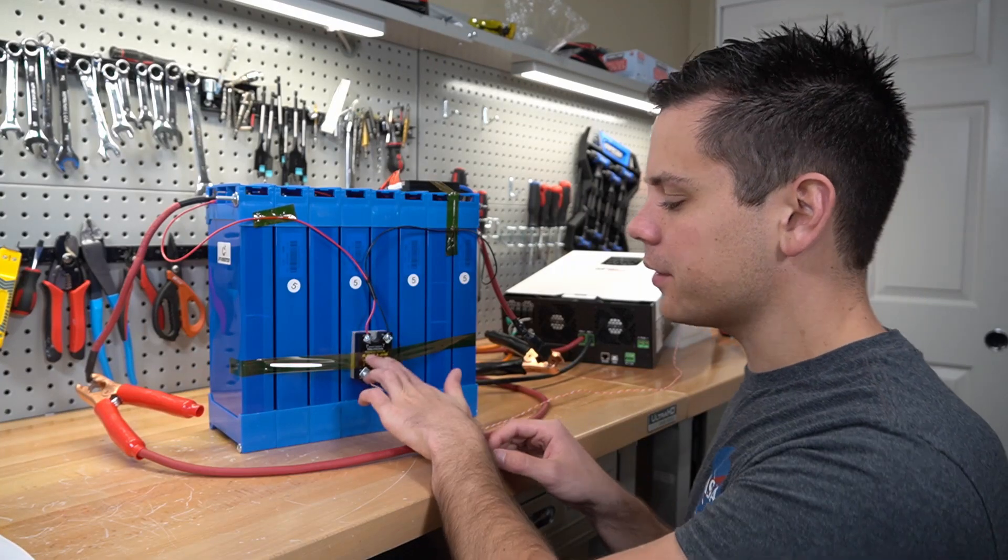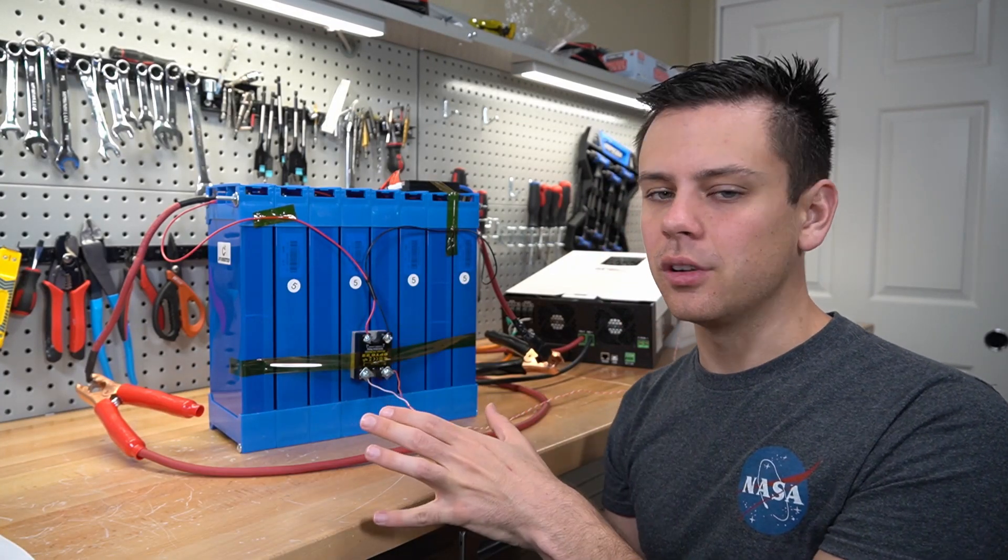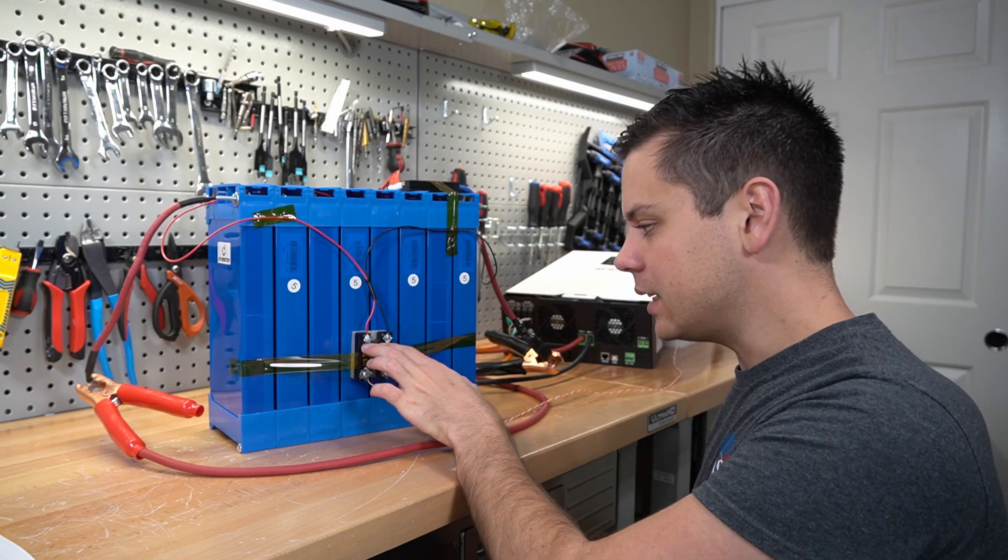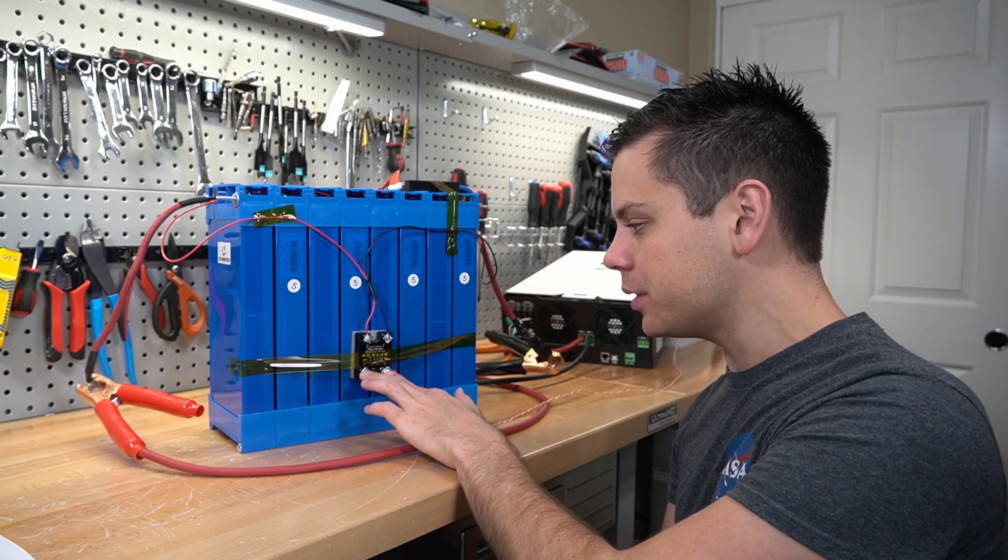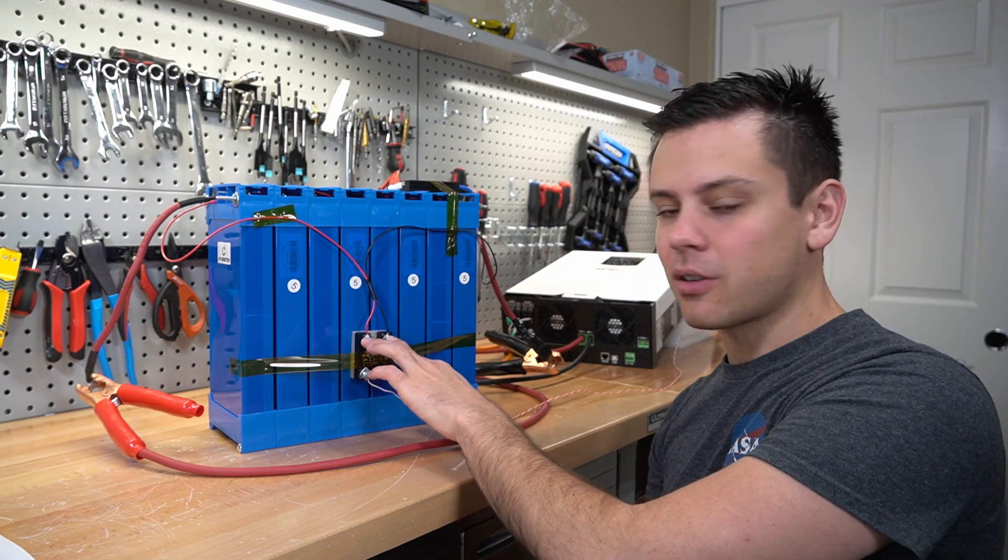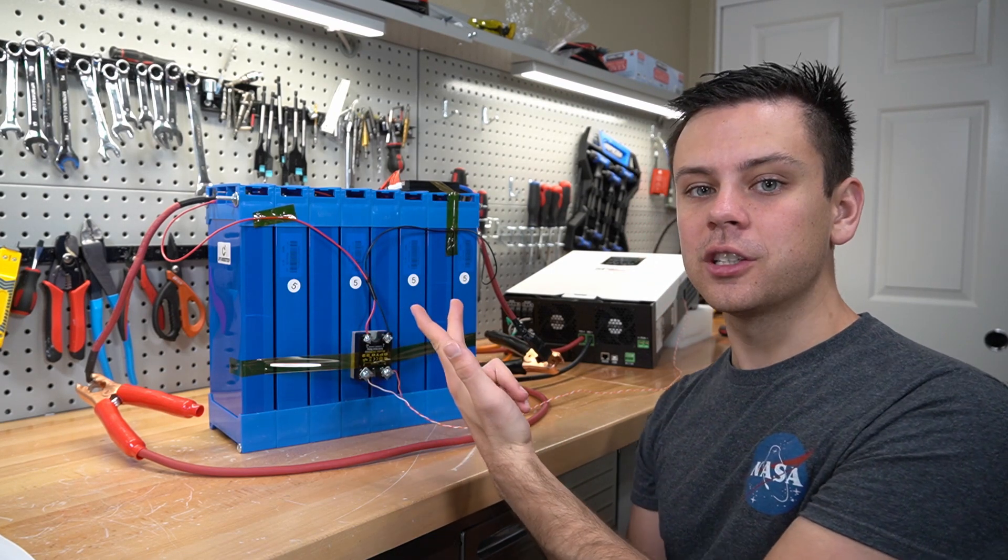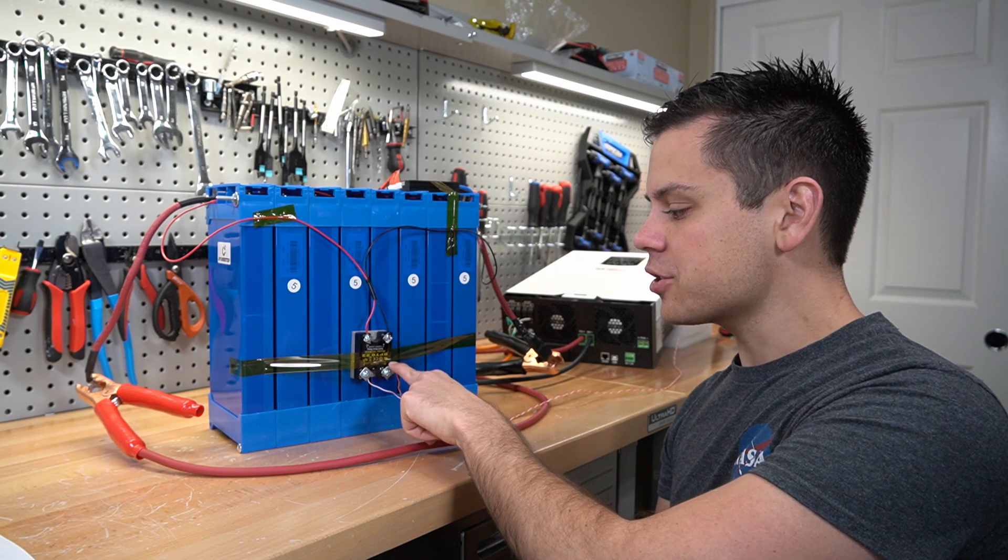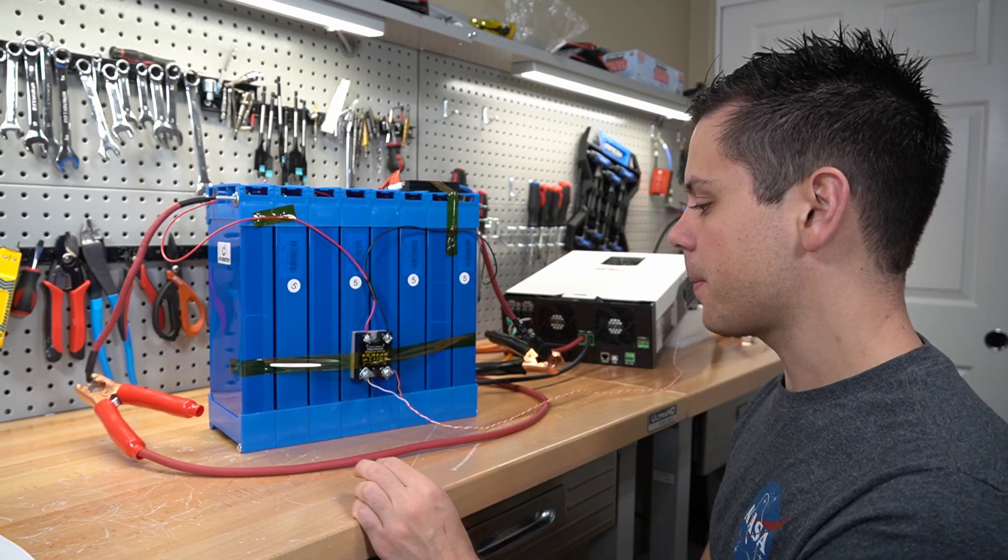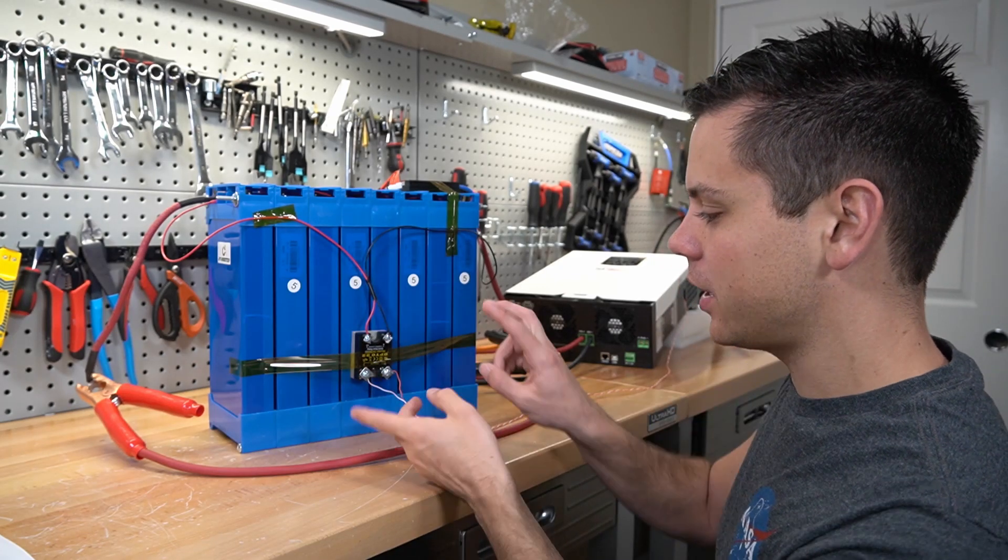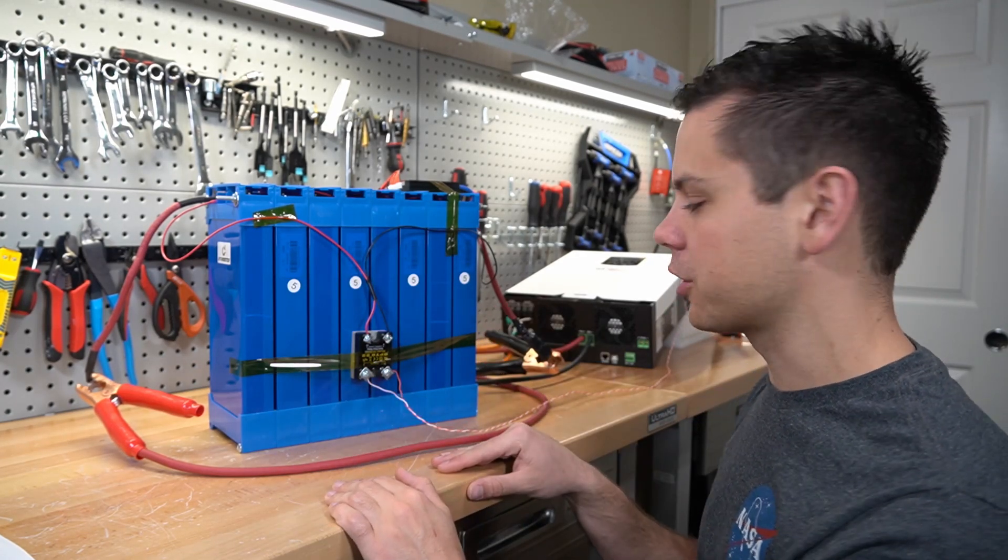Something to note about these solid state relays is some of them are directional. So make sure that you have a DC input and DC output. And if it doesn't work at the DC output side, but you see voltage right here, that means you have to reverse the two wires because a small amount of current does flow one way and not the other. And I actually had that problem with this one. So I had to reverse the wires and then everything worked perfectly.